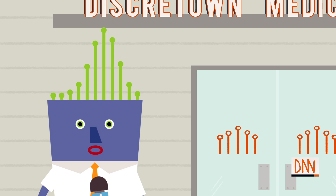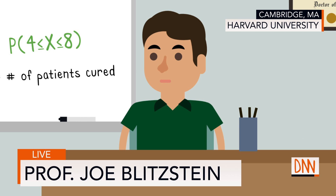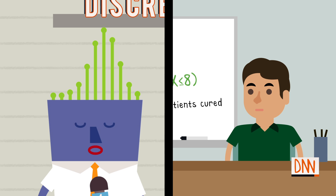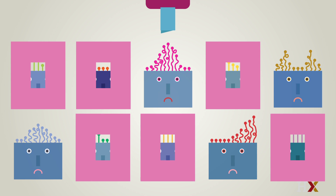We go now to Professor Joe Blitzstein from the Harvard Statistics Department to tell us more about how to make sense of this disturbing situation. Professor, can you tell us how effective the treatment is? Based on the limited data we have so far, we estimate that the treatment has a 60% chance of success and a 40% chance of failure. So each day, you expect that 6 out of the 10 treated patients will be cured? On average, 6 out of the 10 will be cured.